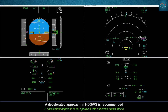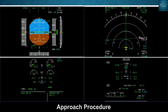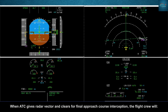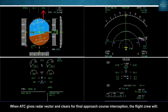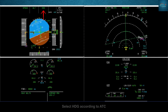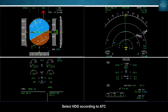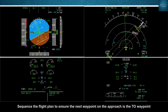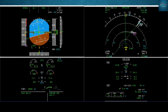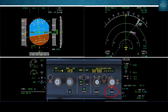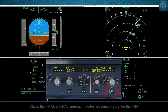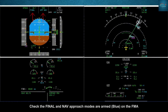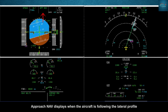The decelerated approach in heading vertical speed is recommended. Sequence the flight plan to ensure that the next waypoint on the approach is the FAF waypoint. Select the approach pushbutton on the FCU. Check that the final and NAV approach modes are armed on the FMA.